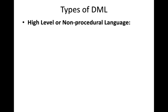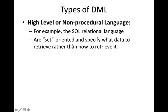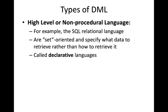There are two types of DML. The first is high-level or non-procedural language — an example is SQL, a relational language. These are known as set-oriented languages and specify what data to retrieve rather than how to retrieve it. For example, in SQL we simply specify SELECT students whose date of birth is greater than 1990 — we need not specify how to retrieve it. This type is also called declarative language.